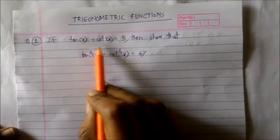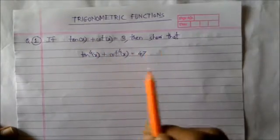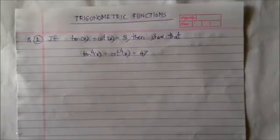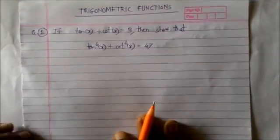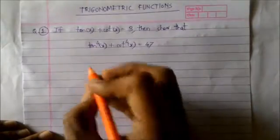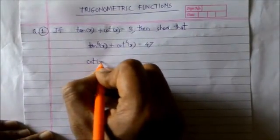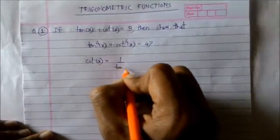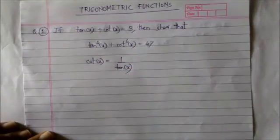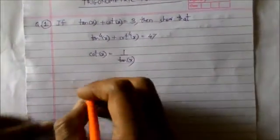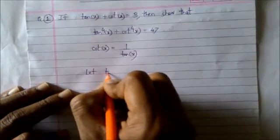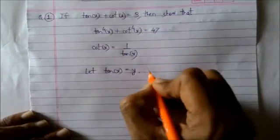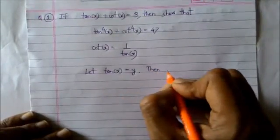If tan x plus cot x is equal to 3, then show that tan⁴x plus cot⁴x is equal to 47. Before solving this problem, let us note one thing: cot x is equal to 1 upon tan x. Therefore, if I write tan x as y, I can write cot x as 1 upon y.